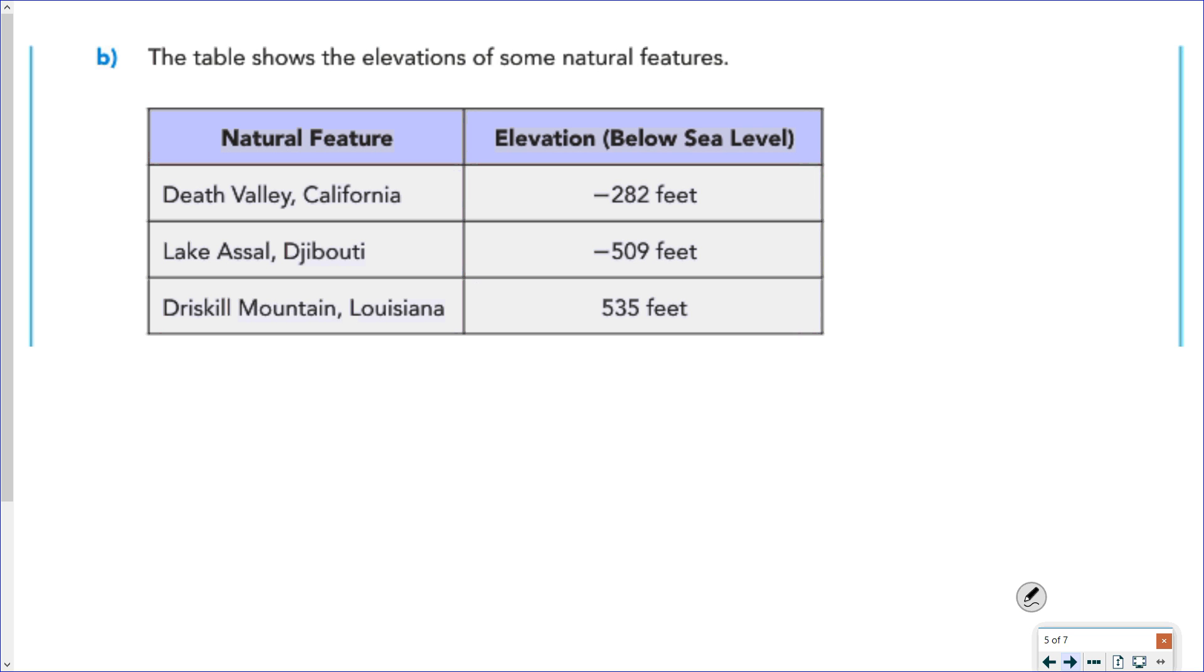Here we have a table with some natural features and their elevations. We have Death Valley, Lake Assault, and Driscoll Mountain, and their accompanying elevations. So, if I was to ask you to write an inequality comparing the elevation of Death Valley to the elevation of Lake Assault, Death Valley has an elevation of negative 282 feet. Lake Assault has an elevation of negative 509 feet. Negative 282 is greater than negative 509.